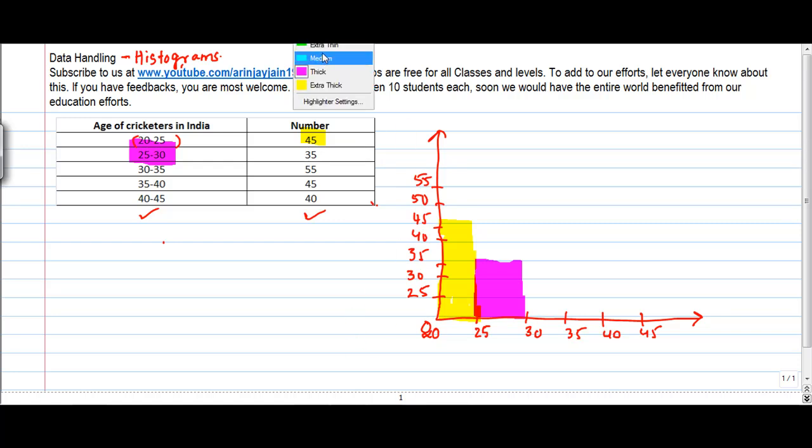Okay right let me use the third one 30 to 35 frequency 55 so this is what it is 55 is here I draw this graph like this so the area covered by this basically is